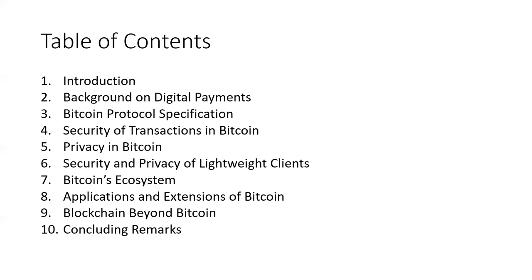Chapters seven, eight, and nine are really more high-level chapters after the detailed chapters in four, five, and six. Seven talks about Bitcoin's ecosystem: payment processors, exchanges, wallets, mining pools, and so on. Chapter eight covers applications and extensions of Bitcoin — really other cryptocurrencies like Litecoin, Dogecoin, Namecoin, and digital assets. Chapter nine talks about blockchain beyond Bitcoin, covering Ethereum, Ripple, and some other blockchains.